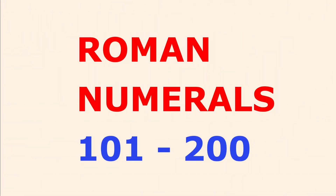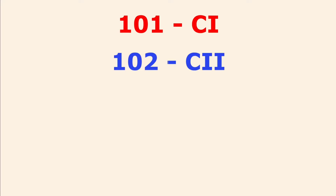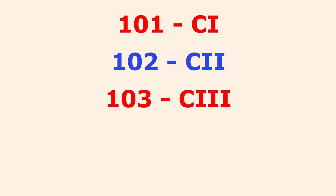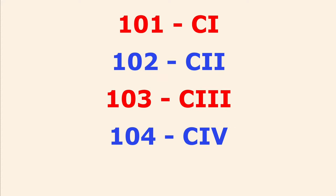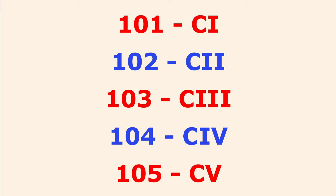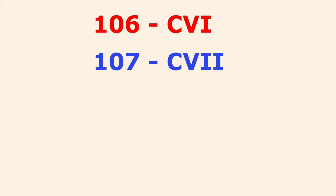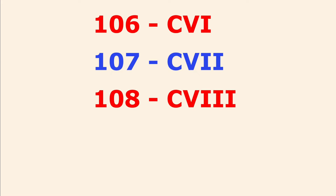Hello everyone, today we will learn Roman numbers from 101 to 200. So let's begin. 101: CI, 102: CII, 103: CIII, 104: CIV, 105: CV, 106: CVI, 107: CVII, 108: CVIII.